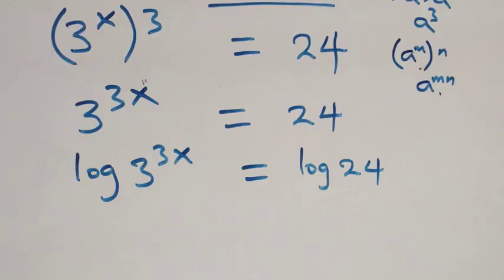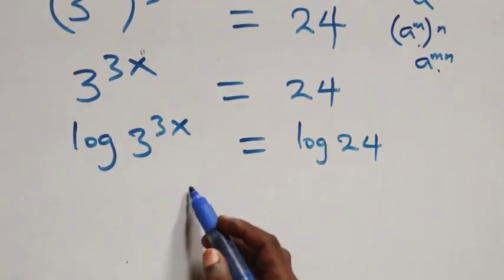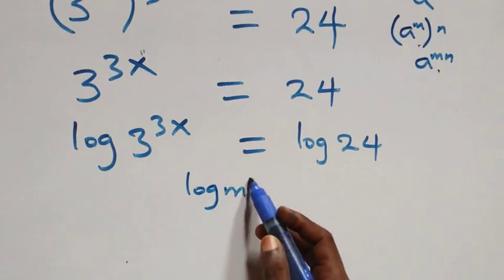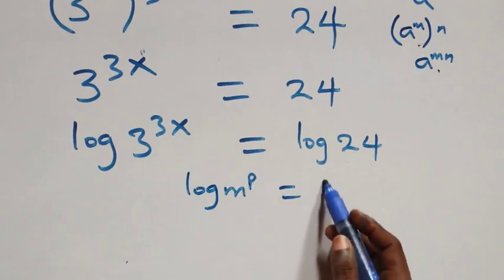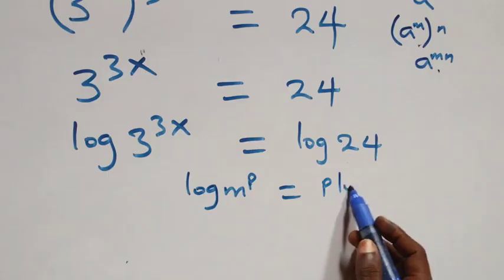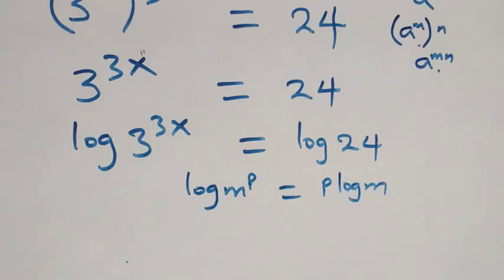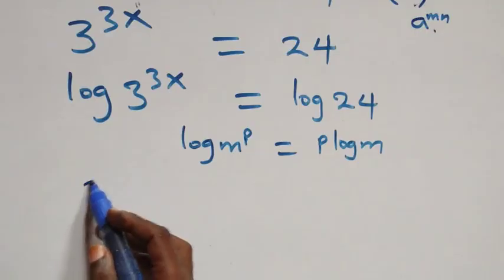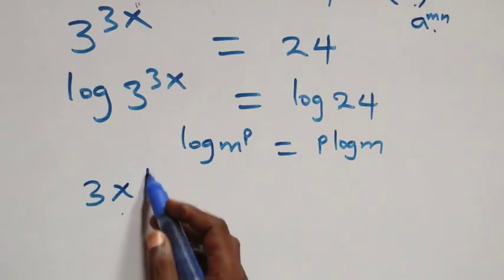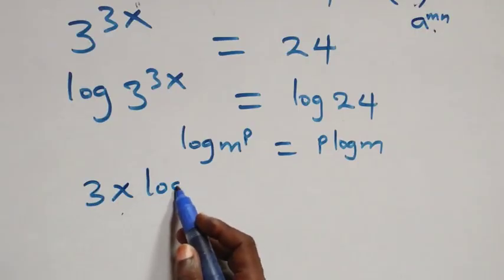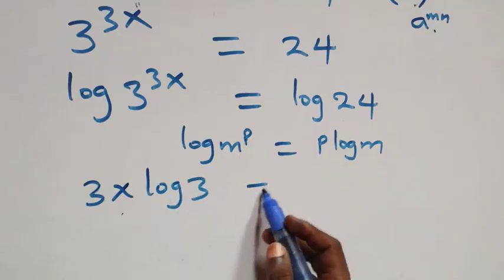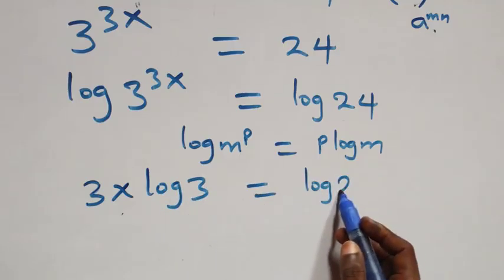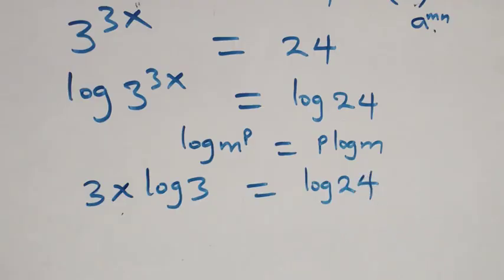The next step: we apply the power rule of log. When we have log m raised to power p, it is the same thing as p log m. So what we have here becomes 3x log 3, equals to log 24 on this side.